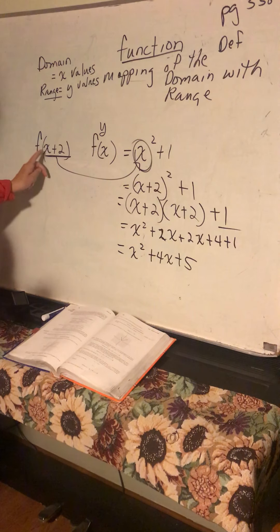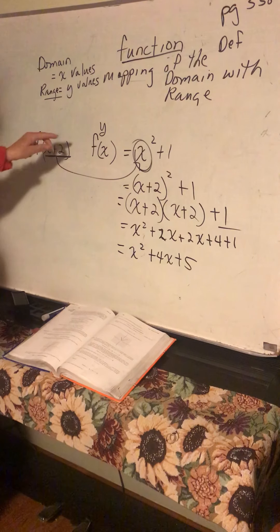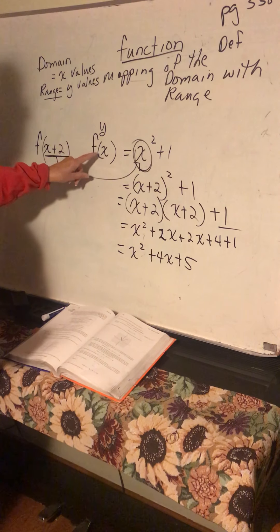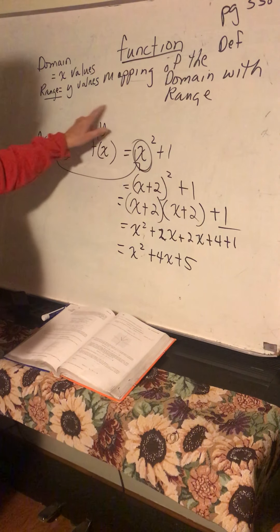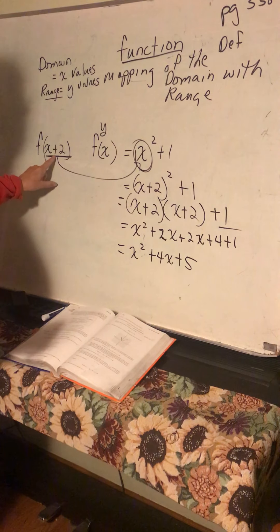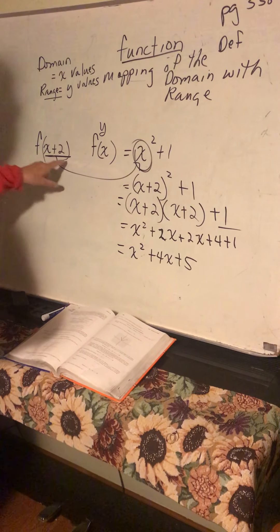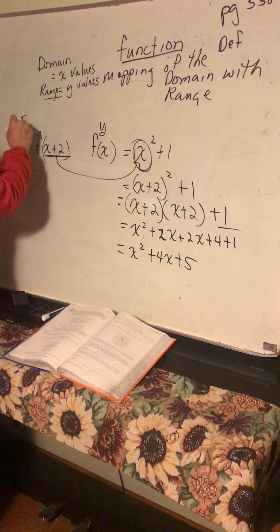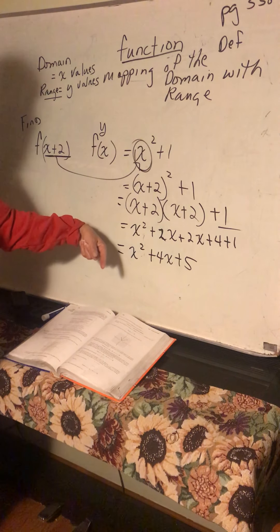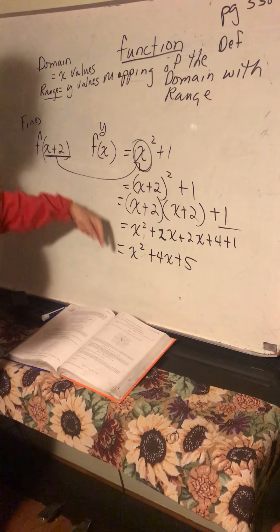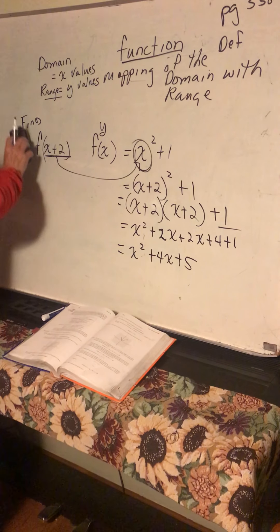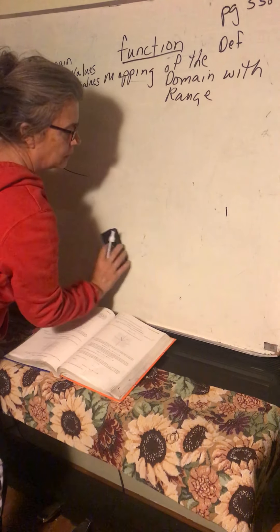Basically, when you have these f of x functions, they're going to give you something to solve or simplify. Remember that f of x is just another name for y. Then you're going to put whatever value they tell you to find in for x, and then solve for your y value. You're finding a specific range value that goes with your domain — your x and y value.